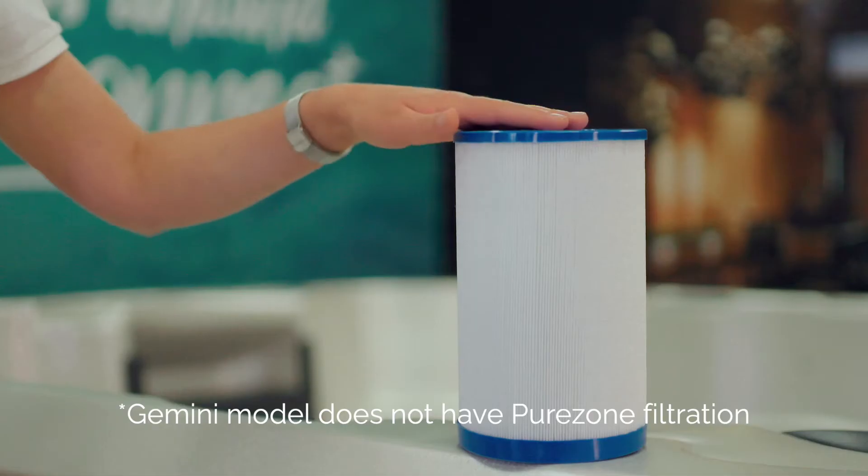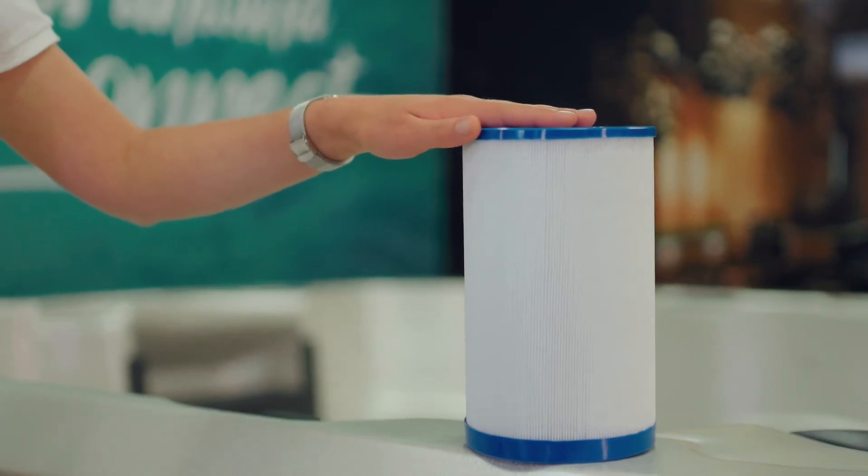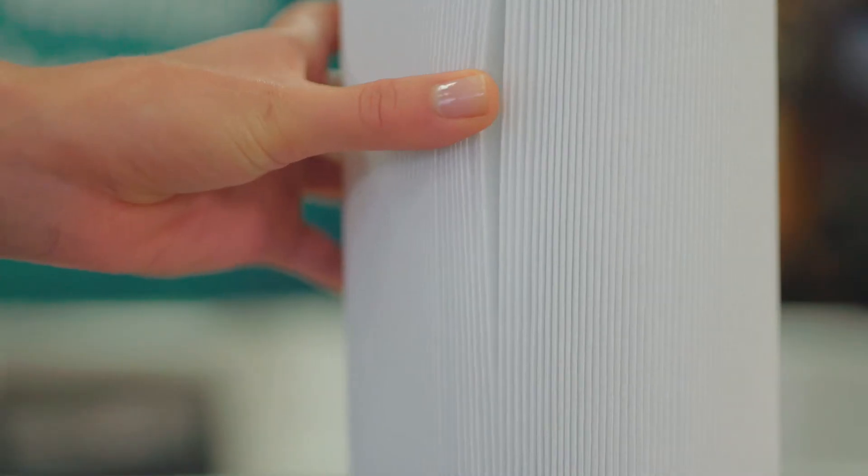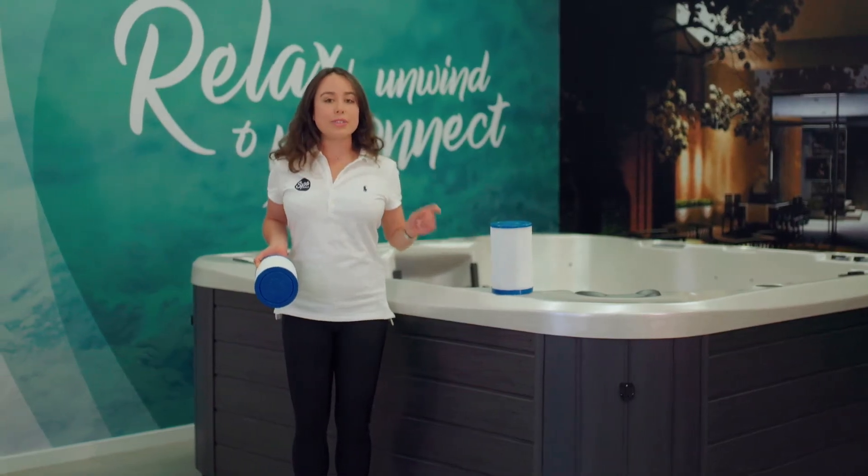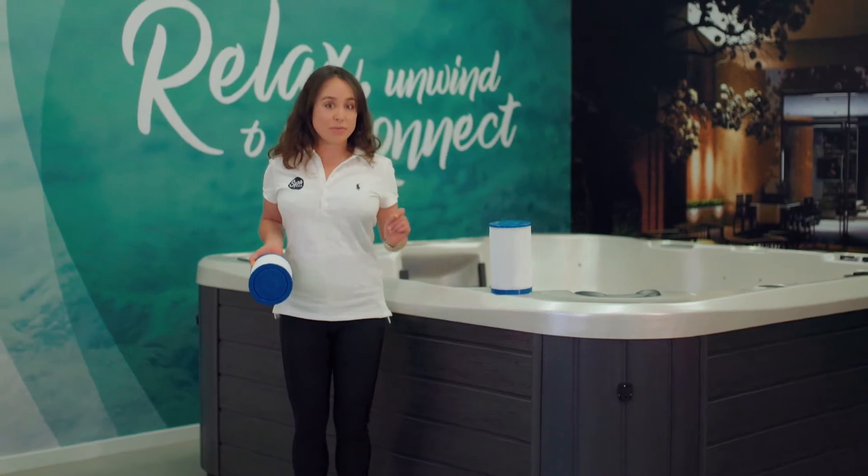Every Vortex spa comes with three filters. It has two of these pleated filters here, and they trap particles as small as 20 microns. Now to put this into perspective, a single human hair is 70 microns.